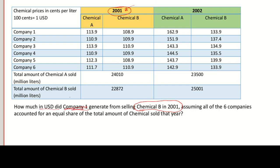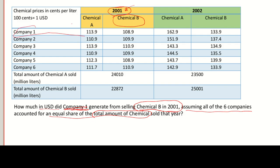Reading the question again: how much in USD did company one generate from selling chemical B in 2001, assuming all six companies accounted for an equal share of the total amount of chemicals sold that year? The keywords I'm focusing on are: company one, chemical B, and 2001. For the year 2001 there is chemical B in the table, so those are the data points I'll be looking into.